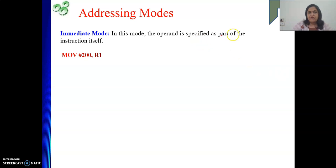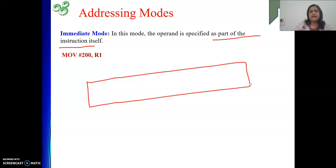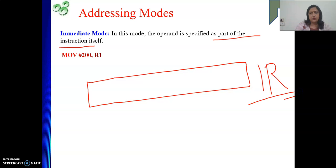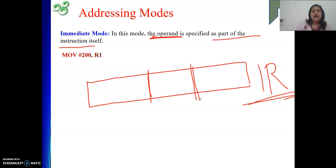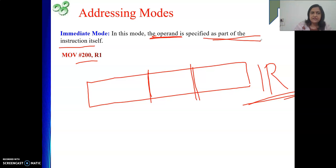The next addressing mode is immediate mode. In immediate mode, the operand is specified as part of the instruction itself. So when the instruction is with you, the operand is also with you. When we execute an instruction, it is present in the IR — after being fetched from memory and decoded. The operand is somewhere in the IR itself. For example, MOVE #200, R1 — the operand 200 is available immediately inside your instruction, with no need to go to memory separately to get it. That is why it is called immediate mode.